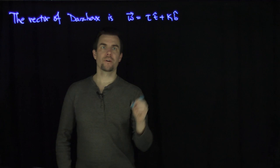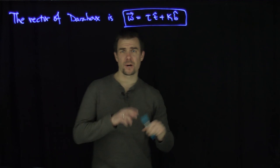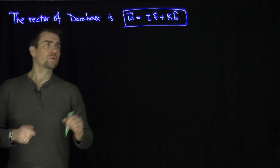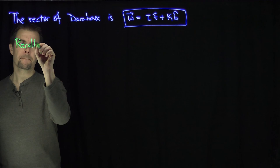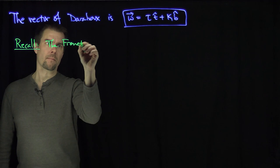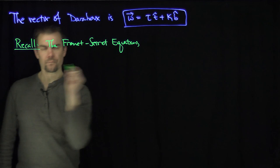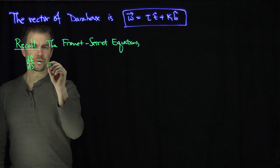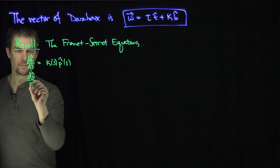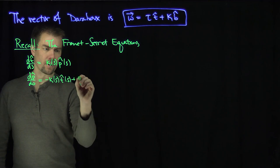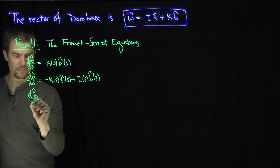Let's figure out what properties this vector has. It's a very special vector — it's a vector which is equivalent to the rotation vector of the Frenet-Serret frame. I'd like to recall what the Frenet-Serret equations are. The Frenet-Serret equations are: dt/ds = κ(s) p̂(s), dp/ds = −κ(s) t̂(s) + τ(s) b̂(s), and db̂/ds = −τ(s) p̂(s).